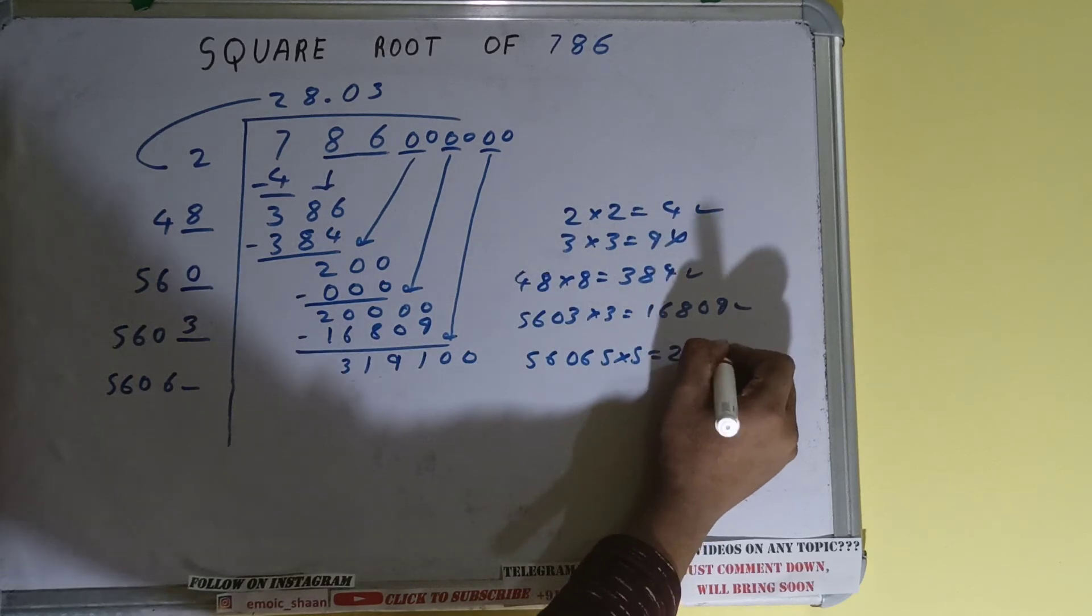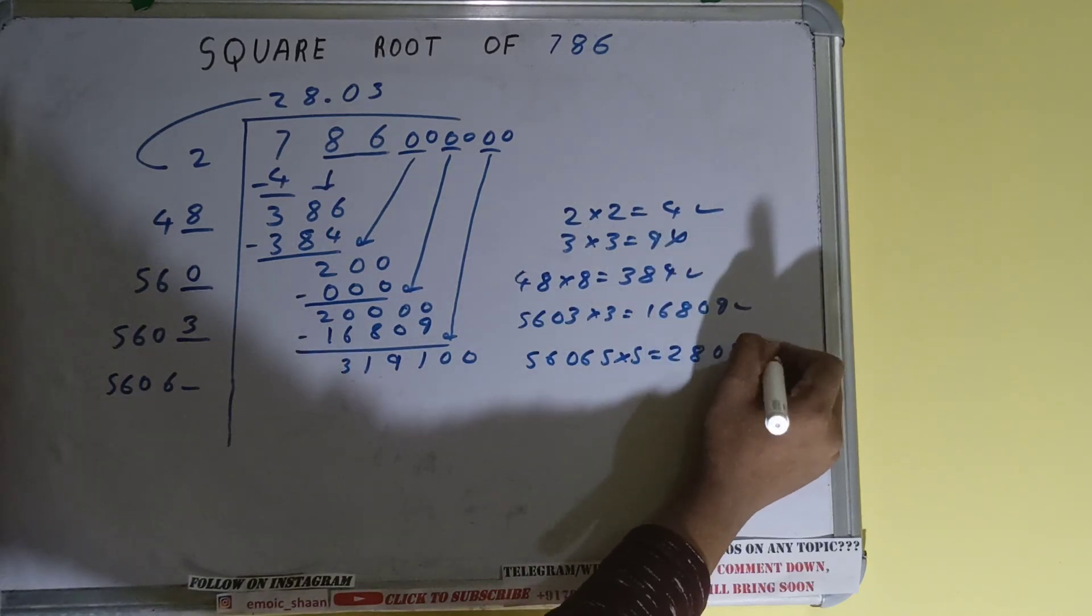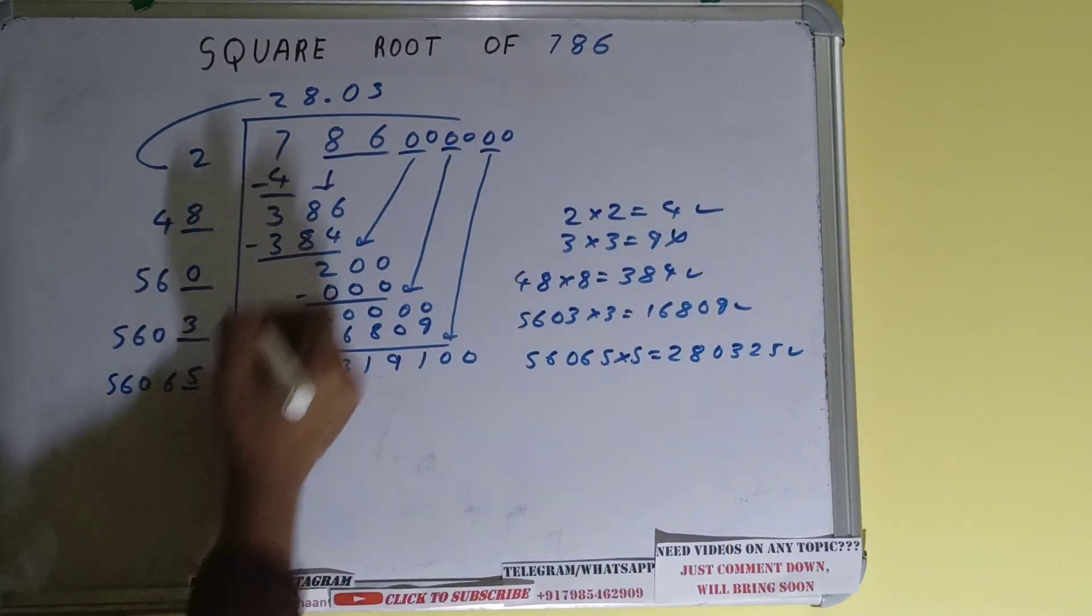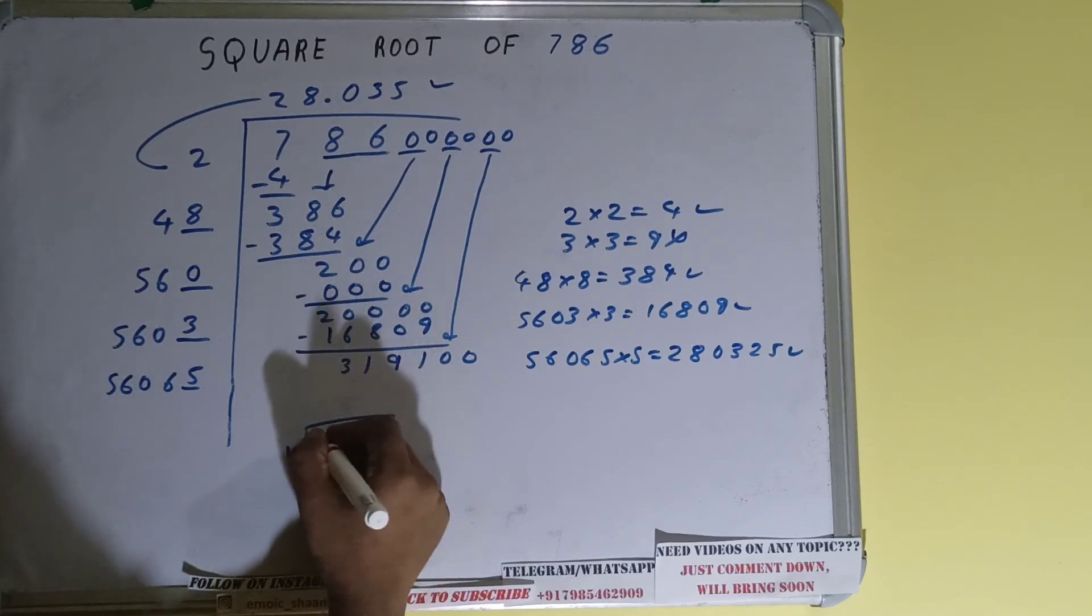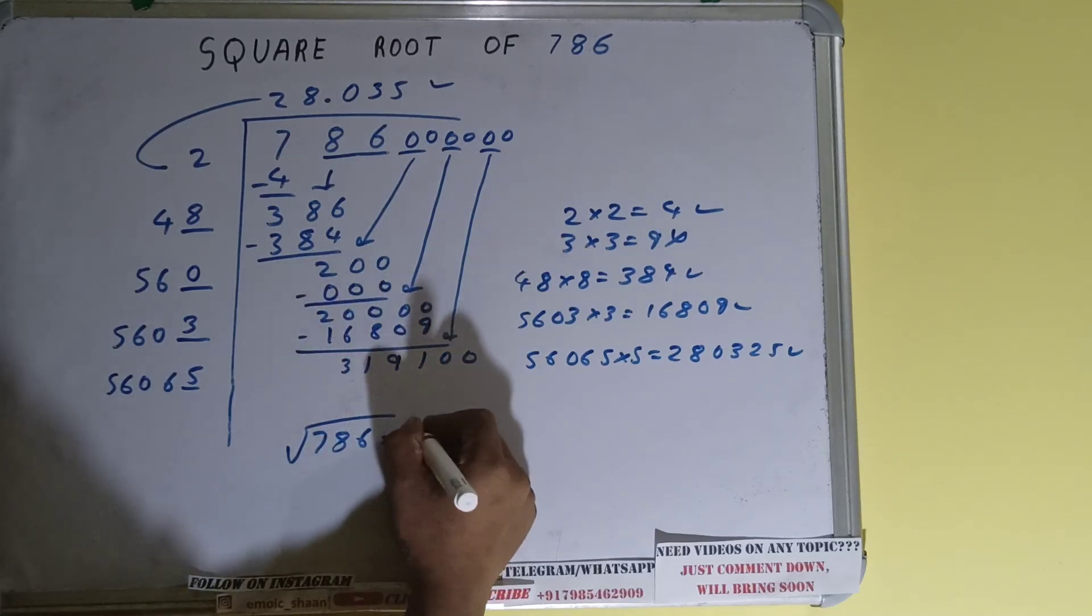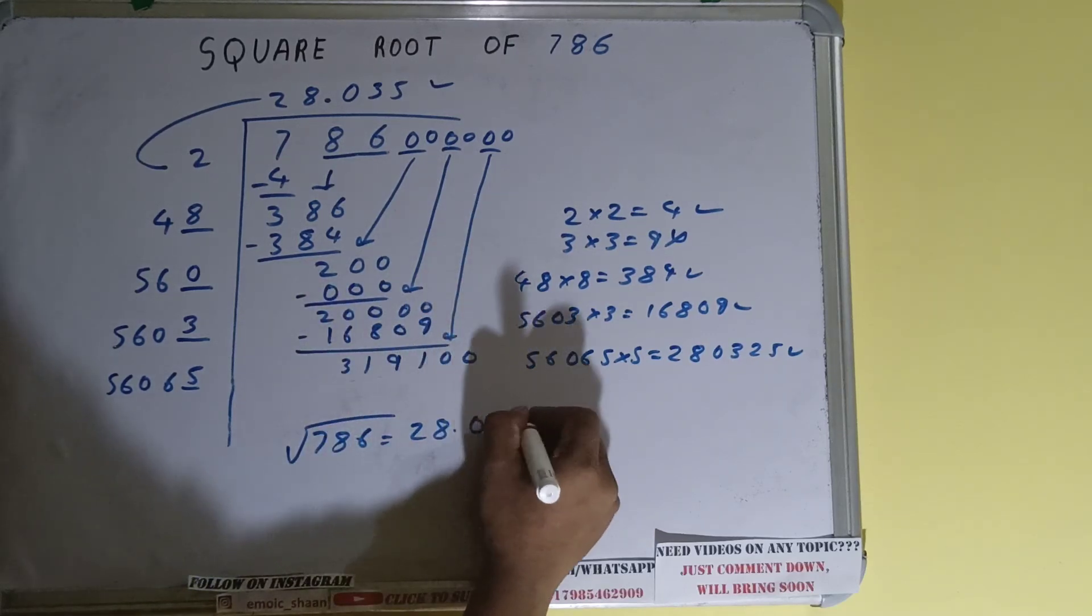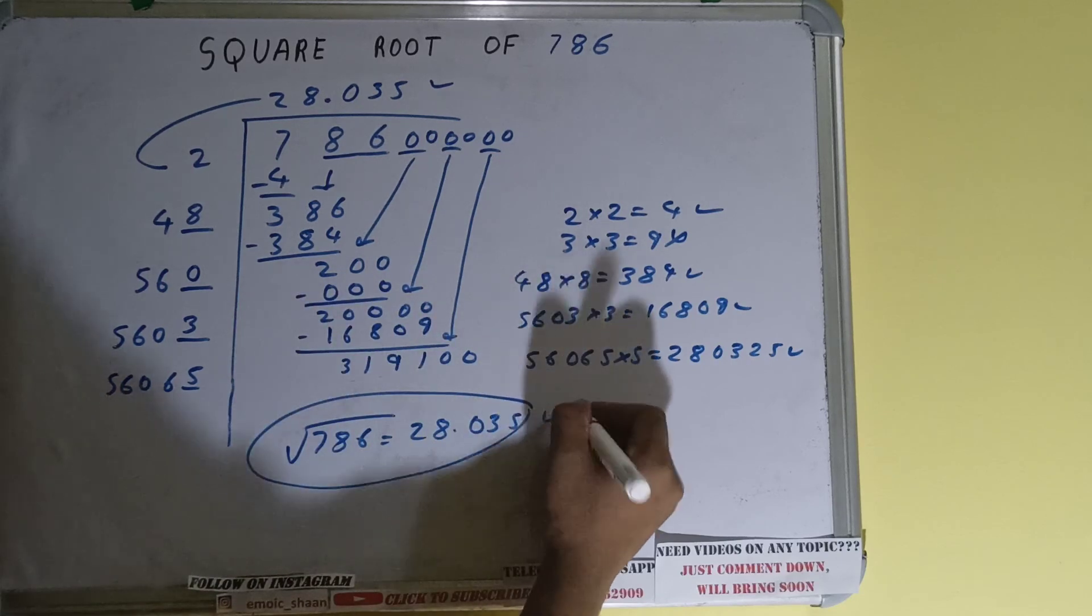It will be 280,325 which is good to take. So 5 here and 5 here but we don't need to calculate because we got the answer correct up to three decimal places. So square root of 786 will be 28.035 and that would be the answer.